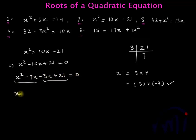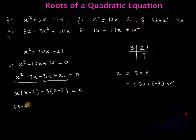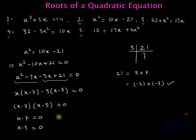From the first group, taking x common gives x minus 7. From the second group, taking minus 3 common again gives x minus 7 inside the bracket. Taking x minus 7 common leaves x minus 3 in the other bracket, equal to 0. So either x minus 7 equals 0 or x minus 3 equals 0, giving x equals 7 and x equals 3 as the two solutions of the second quadratic equation.